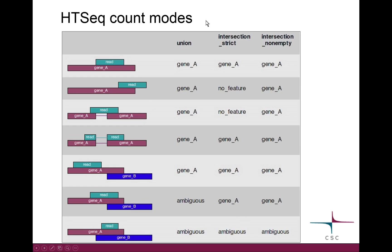For the counting modes, there are three different modes and the default is the union mode. Usually for simple situations it doesn't matter which mode you select. The strict mode makes a difference if the read is overhanging the gene or going across an intron — strict is not going to count it, the others are. It also matters when a read matches the purple gene totally but only partially overlaps gene B: the default treats this as ambiguous and won't count it, but the strict mode would count it for the purple gene.